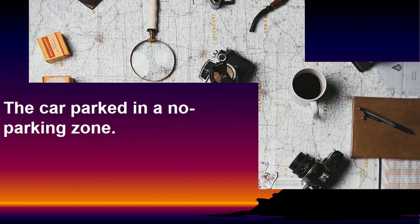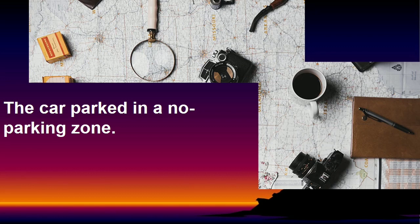Let's practice again. I need you to identify these three sentences, whether they are correct or incorrect. Number one: 'The car parked in a no parking zone.' The subject is 'the car' and the verb is 'park.' The car is definitely parked — it cannot park by itself. So this sentence should be passive, with structure subject + to be + verb 3. What is missing? The to be is missing. The correct sentence is: 'The car is parked in a no parking zone.'